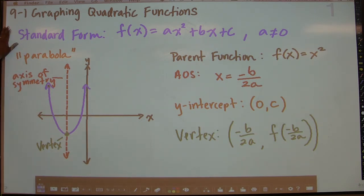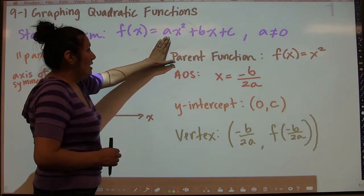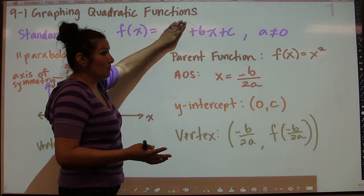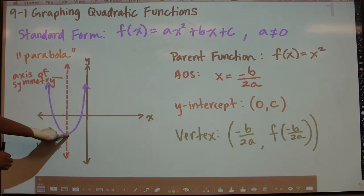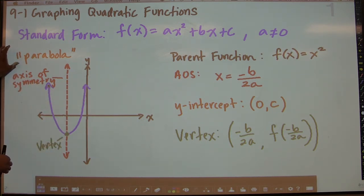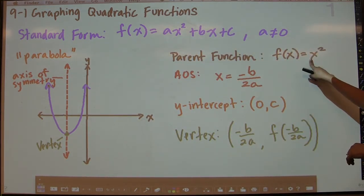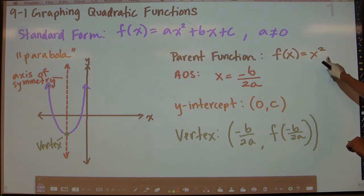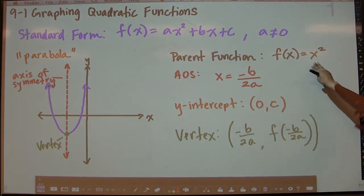For the standard form of a quadratic, we have f(x) = ax² + bx + c. You've seen that before. In order for it to be a quadratic, the a value has to be something that's not zero, because if a were zero, this term wouldn't exist and it would just be linear, not quadratic. The name of the shape of the graph is a parabola. The parent function — the most basic, simplest form of a quadratic — is when a=1, b=0, and c=0, giving us f(x) = x². That's what we call our parent graph.